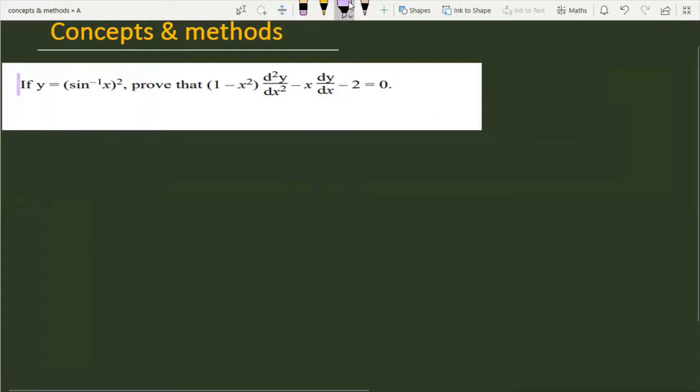So the problem is, if y is equal to sin inverse x to the power 2, then we have to prove that 1 minus x square into d square y over dx square minus x dy over dx minus 2, and that is equal to 0.